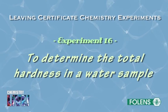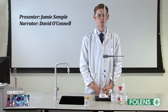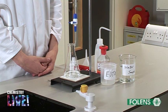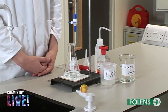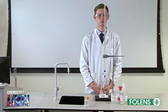Experiment to determine the total hardness in a water sample. Measuring the hardness of water involves measuring the concentration of calcium and magnesium ions in a sample of water. The sum of the concentration of calcium and magnesium ions in the water is called the total hardness of the water.